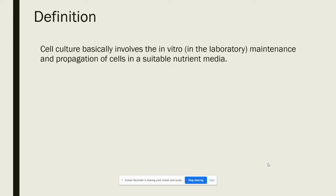What do we mean by cell culture? Cell culture basically involves the in-vitro maintenance and propagation of cells in a suitable nutrient media. We can say that culturing is a process of growing cells artificially.